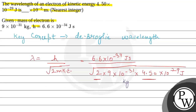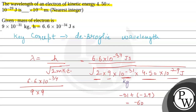Now for the calculation: 2 × 4.5 = 9, and we already have a 9 from the mass, so the denominator becomes √(9 × 9 × 10⁻³¹ × 10⁻²⁹). The powers add: −31 + (−29) = −60, giving √(81 × 10⁻⁶⁰). Taking the root: √81 = 9 and √(10⁻⁶⁰) = 10⁻³⁰.